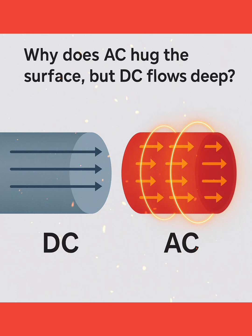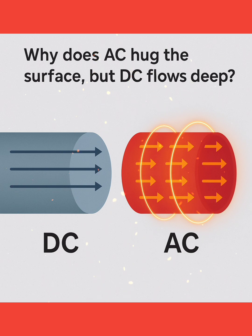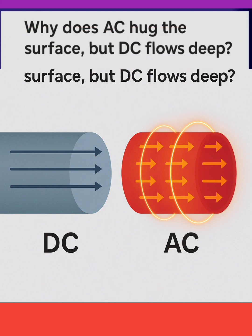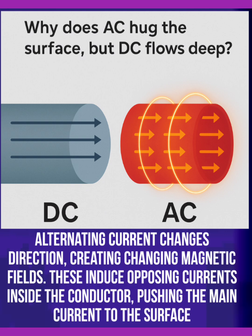Why does alternating current hug the surface, but direct current flows deep in the conducting material? Here we can observe the AC current and DC current flowing in the conducting material.